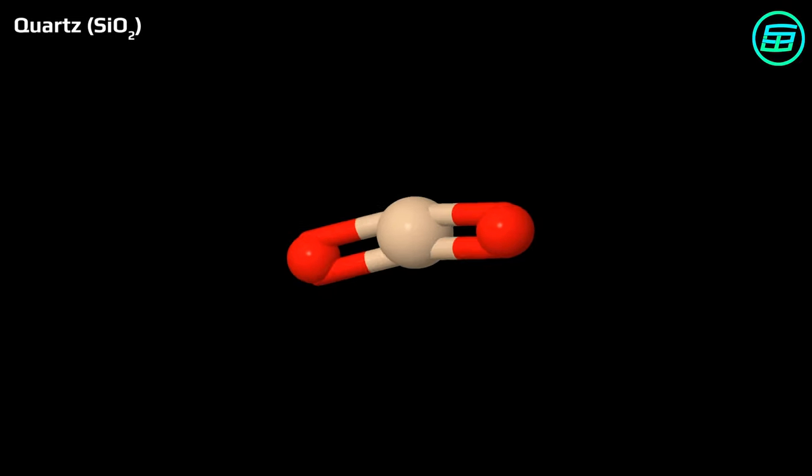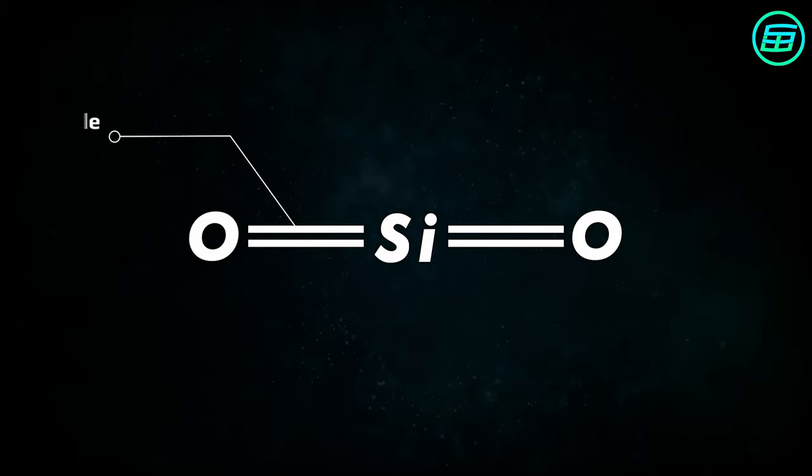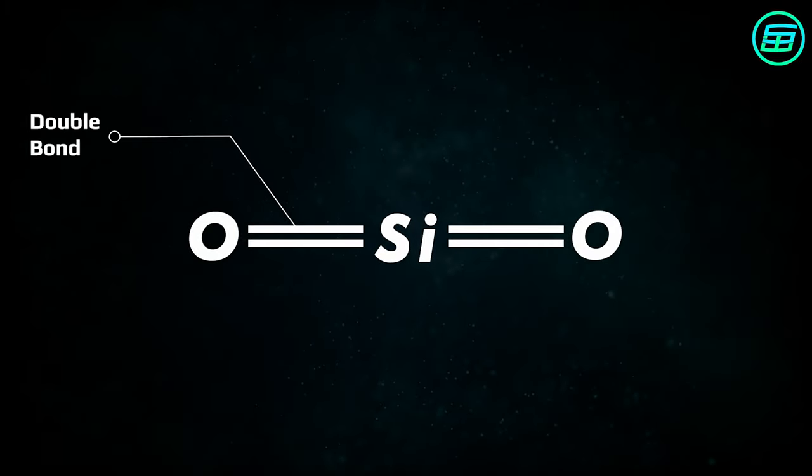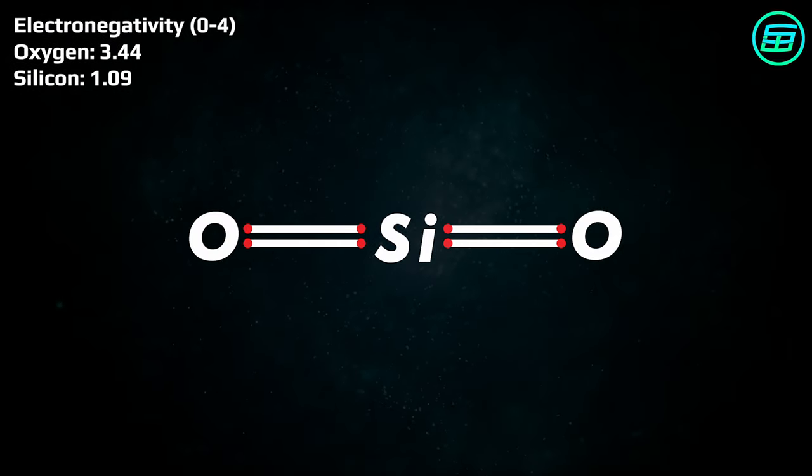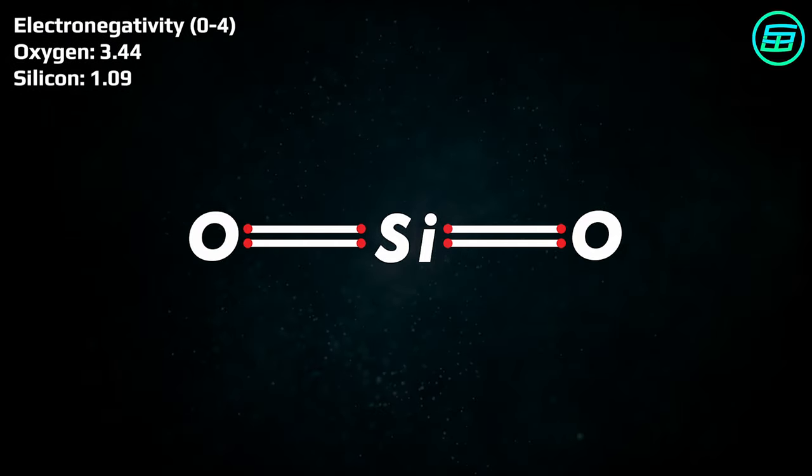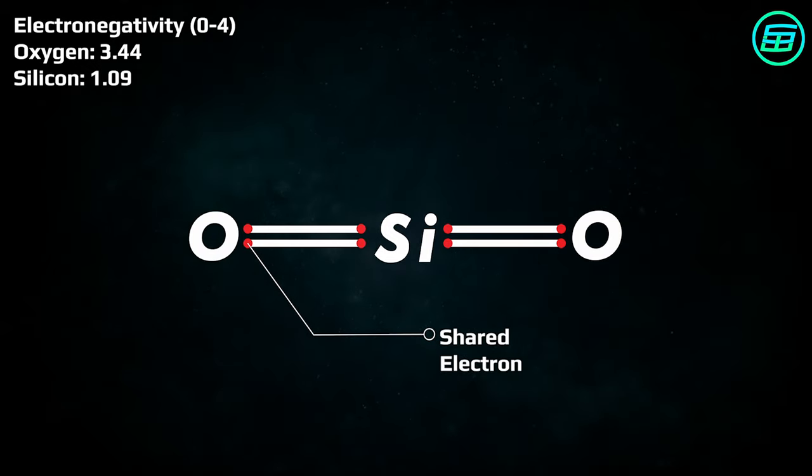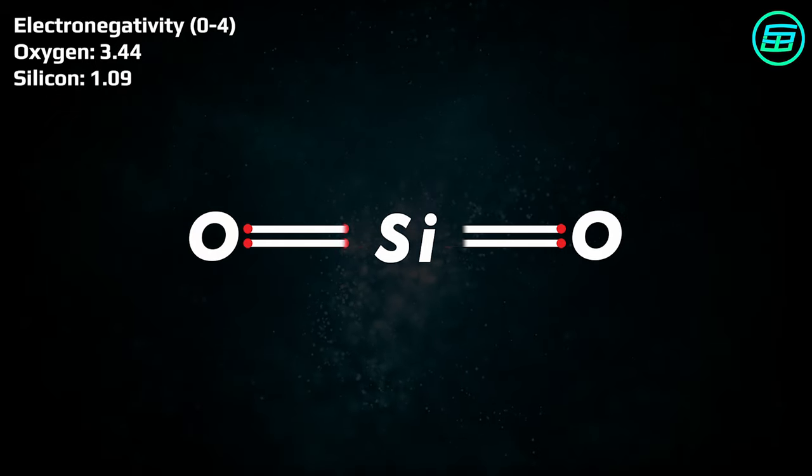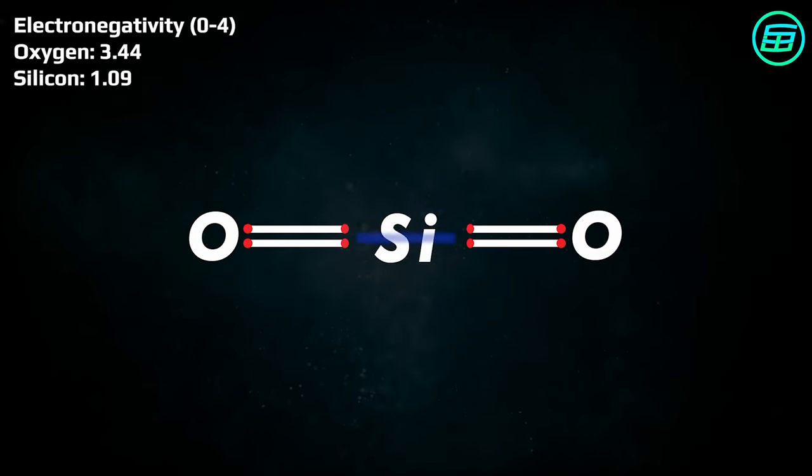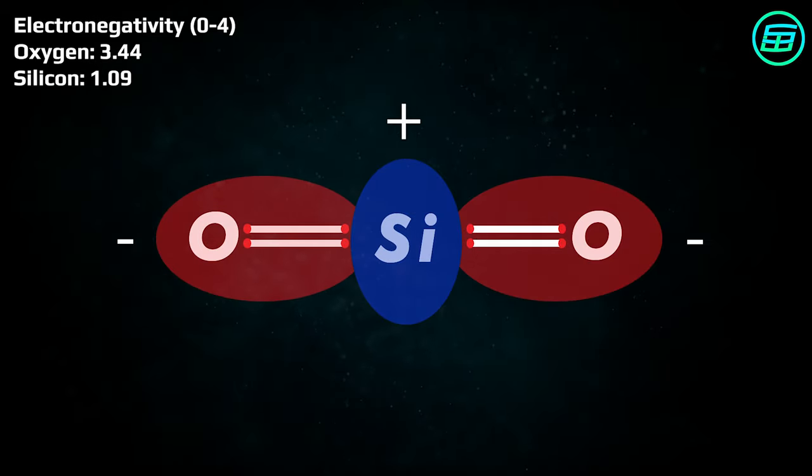The silicon atoms in quartz are partially positive, whereas the oxygen atoms are partially negative. This is because the electronegativity of oxygen is greater than that of silicon, 3.44 compared with 1.09. This means that the oxygen atoms attract the shared electrons more strongly than do the silicon atoms, so that the shared electrons are closer to the oxygen atoms. This makes the oxygen atoms partially negative and the silicon atoms partially positive.